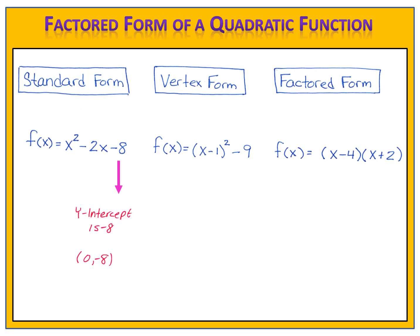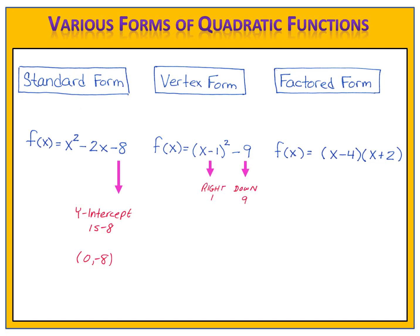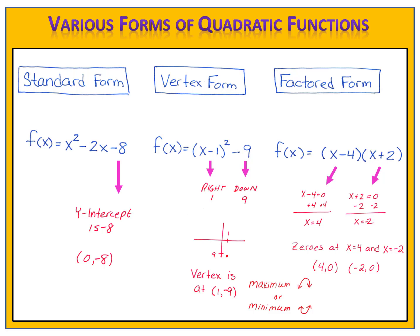The standard form shows us the y-intercept very easily. If you're looking to find the y-intercept and you want to get that without much work, standard form is the best way to go. Vertex form shows us the shift of the parabola from the origin. This parabola shifts right 1 and down 9, which allows us to know where the vertex is. We can use that information to determine the maximum or minimum y value that the function produces. And the factored form allows us to find the zeros or x-intercepts of the function by simply setting each factor equal to zero.